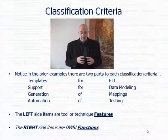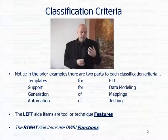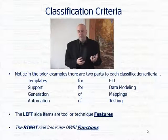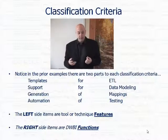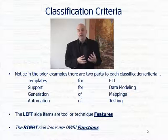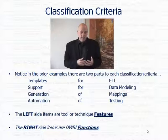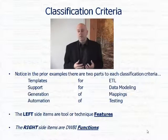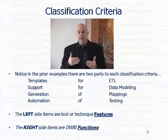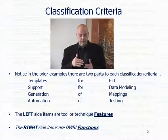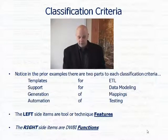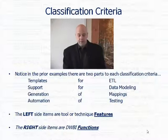We might look at templates that can be used for ETL, or support that could be useful for data modeling. We might look at things that can generate code — code generators — for things like mappings, to generate the mappings for us. We might also have things that help us to automate testing. By pairing the left side for features and the right side for functions, it gives us an idea of where tools fit.